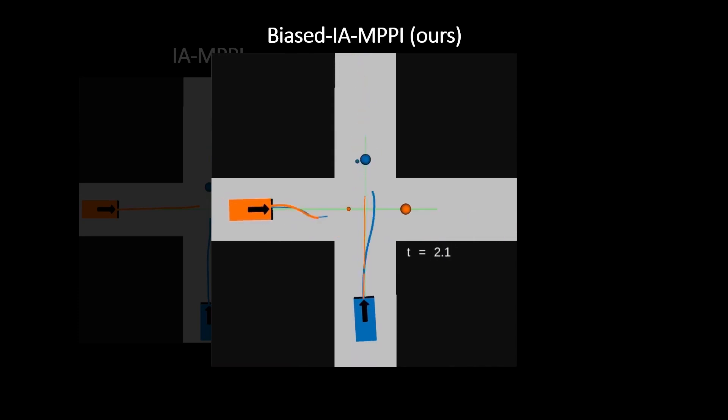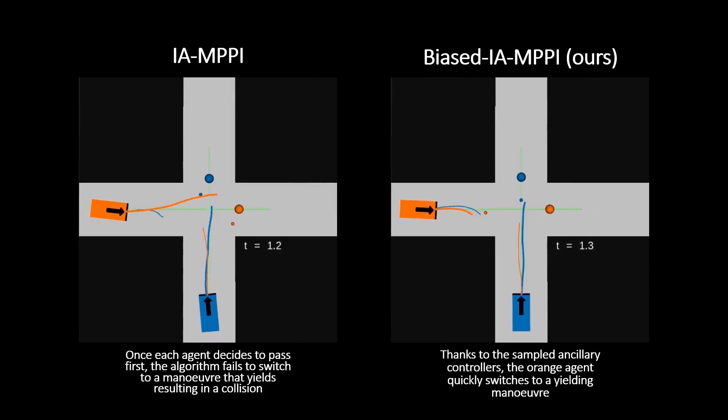Also in this example, both agents think that they can cross undisturbed at the beginning. However, as soon as it's clear that the blue agent is also crossing, the orange agent quickly converges to a yielding maneuver, thanks to the sampled ancillary controllers. This experiment demonstrates that our proposed biased sampling scheme is less prone to local minima, thus more reactive to unexpected changes in the environment.